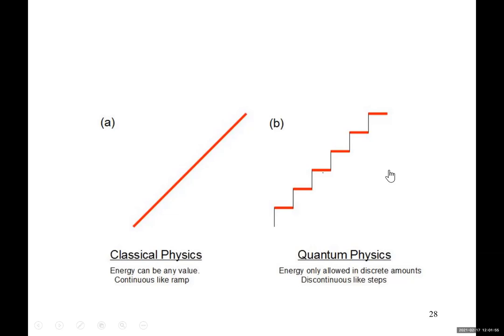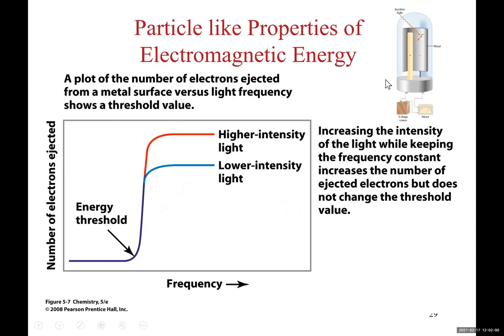This is showing again, going back to photoelectric phenomena. So you are using different frequencies, you are increasing the frequency. Do you see there is no current? Electrons are not ejected. Unless you come to this frequency, which has the right amount of energy, energy is absorbed, electrons are excited. That means you get more current, that means more electrons are ejected.